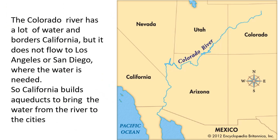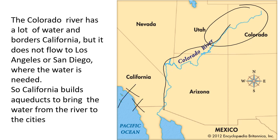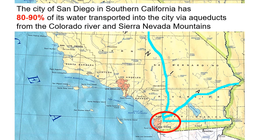The Colorado River has a lot of water — it snows a lot up in the mountains, and all summer long that water melts and makes a very big, large river, but it doesn't go over to San Diego or Los Angeles. So California has built aqueducts to bring water from the Colorado River to the coast where the people are. The city of San Diego gets about 80 to 90 percent of its water transported via these aqueducts from the Colorado River and from the mountains, because it is so dry in San Diego and they get almost no precipitation.